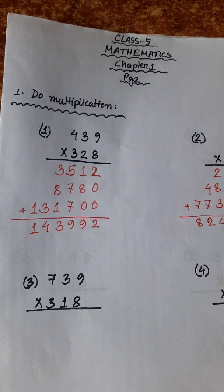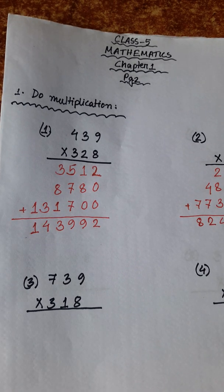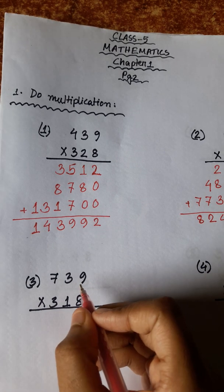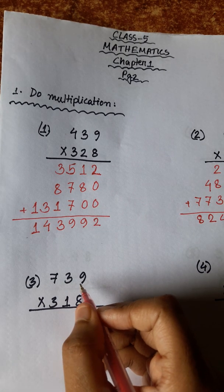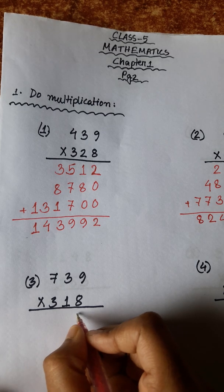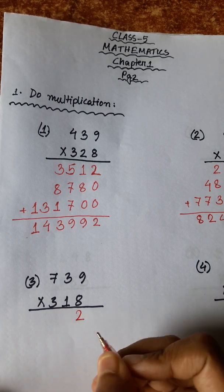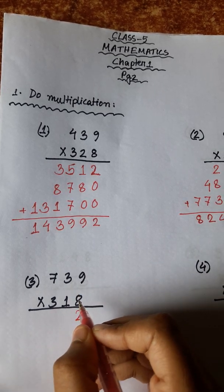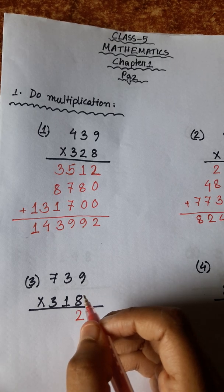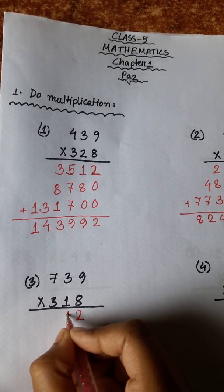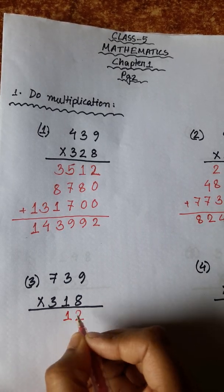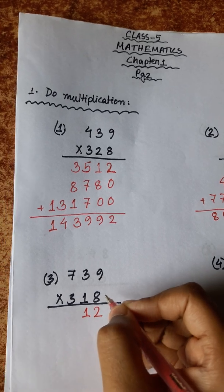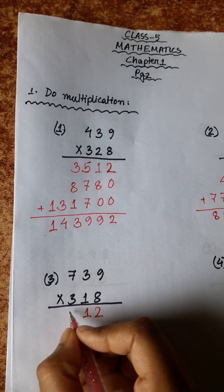7 and 1, 8. Number 3: 739 multiplied by 318. 9 eights are 72, carry 7. 3 eights are 24, plus 7 is 31, carry 3. 7 eights are 56, plus 3 is 59.